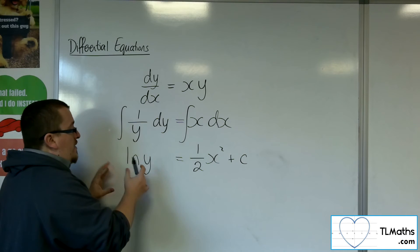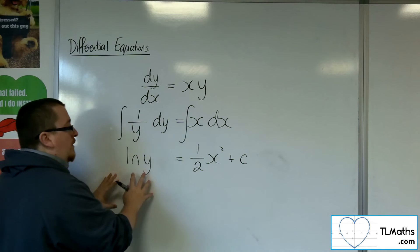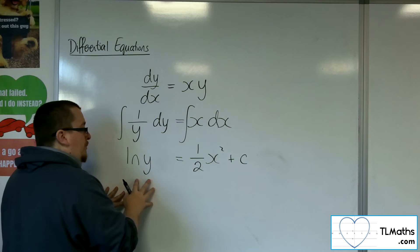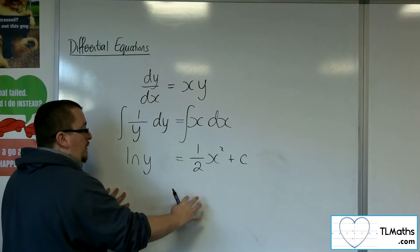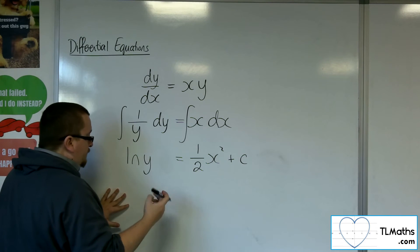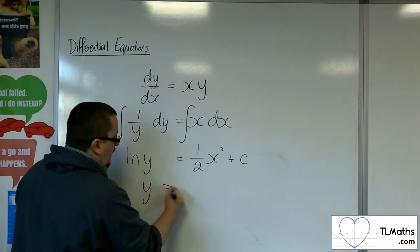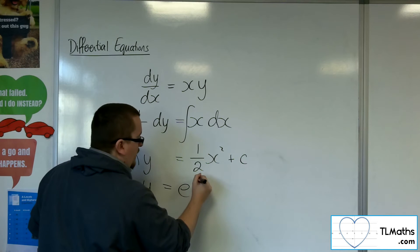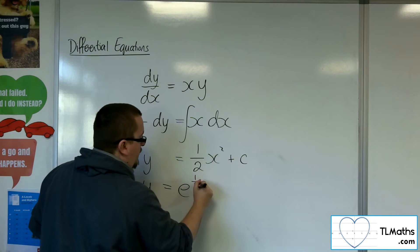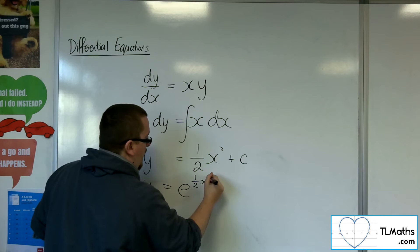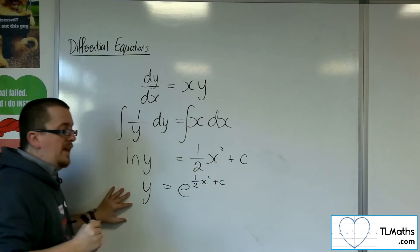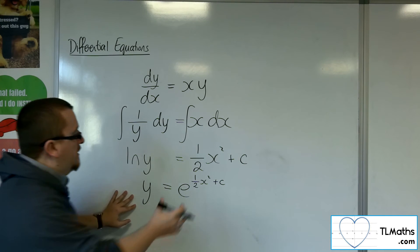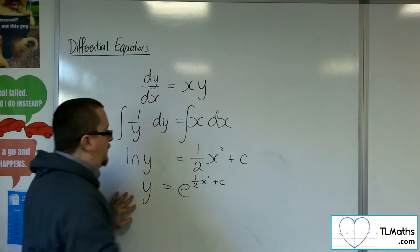We can then solve this by getting to y equals. So I can exponentiate both sides — e to the power of one half x squared plus c, that is e to the whole of that right-hand side.